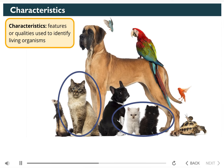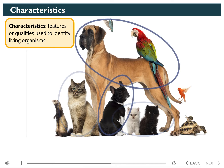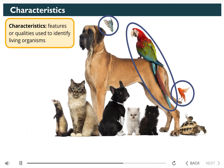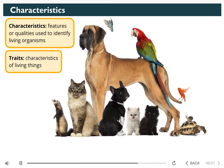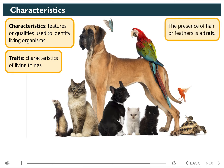The adult cat's pattern is several different colors, but the kittens are solid colors of black and white. The two dogs, even though they're both adults, are very different sizes. Look at the birds — they have different sizes, colors, and patterns too. All of these characteristics are called traits. Traits are characteristics of living things. The presence of hair or feathers is a characteristic or trait.